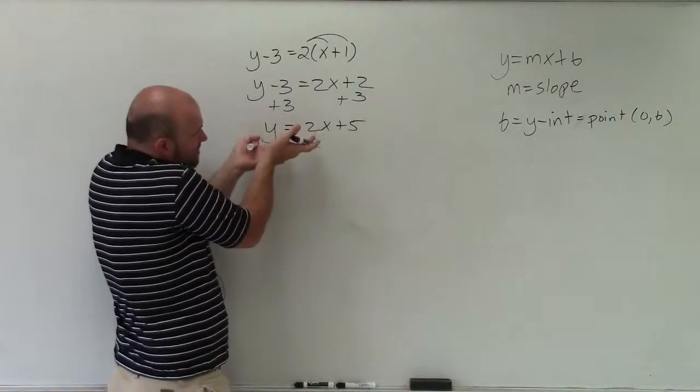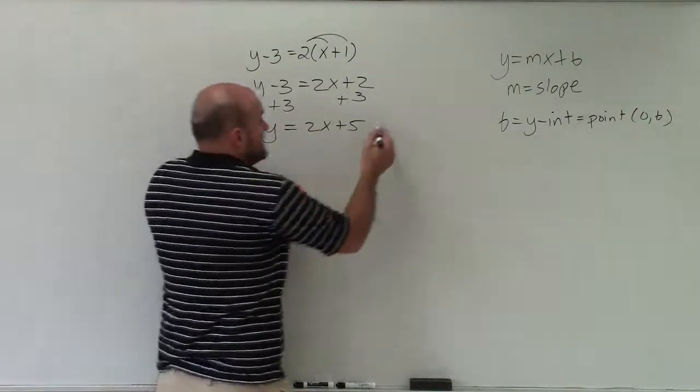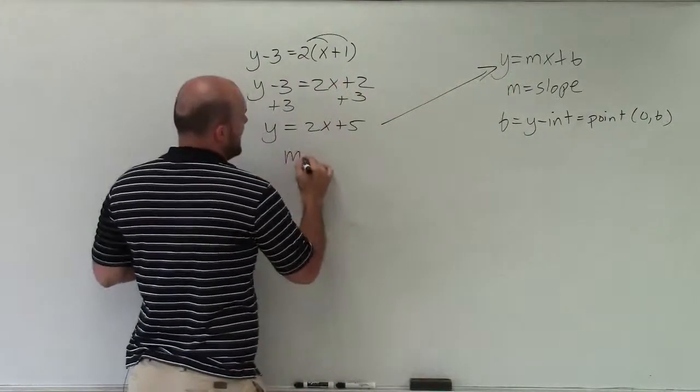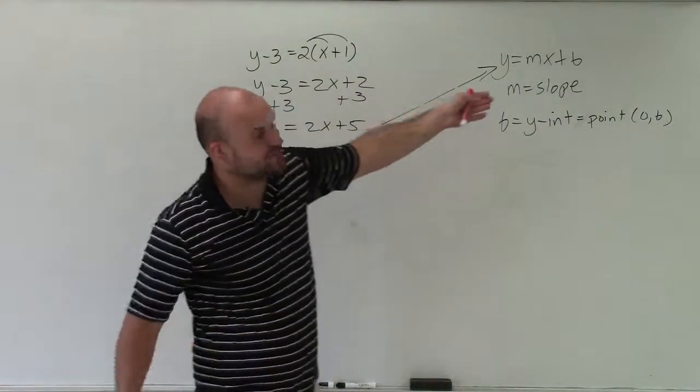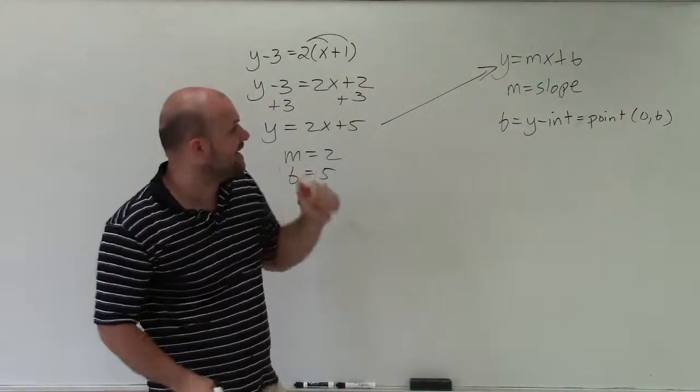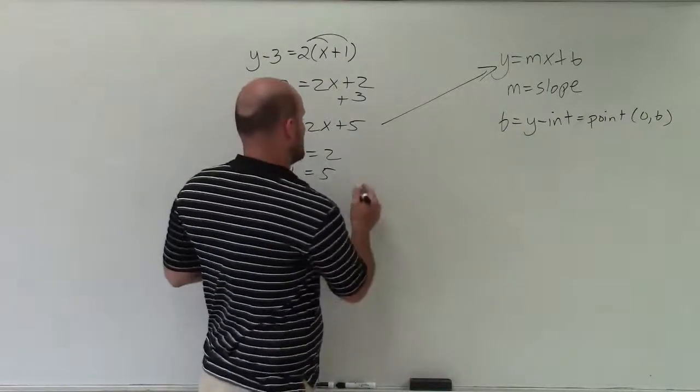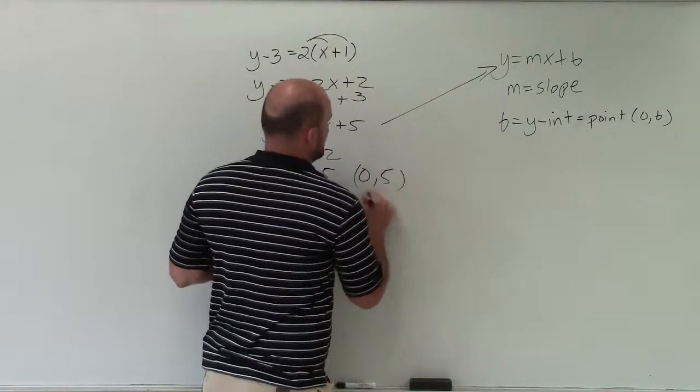I'm left with y equals 2x plus 5. Now you can see that this equation, just by simplifying, is in that form where I can say m equals 2, b equals 5. m is my slope, so 2 is my slope, and 5 is my y-intercept, which sometimes we write as the point (0, 5).